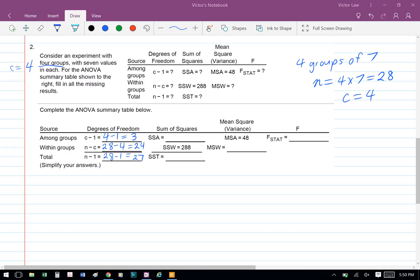Next we can determine the degree of freedom for the among group. The formula is c minus 1, so we have 4 minus 1 which equals 3. For the within group, the formula for degree of freedom is n minus c, so we have 28 minus 4 which equals 24. And for the total variation degree of freedom, we have n minus 1, so 28 minus 1 equals 27.